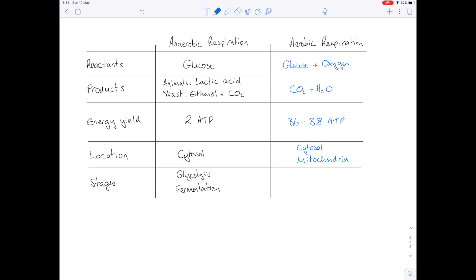These are glycolysis, the link reaction, Krebs cycle, and finally oxidative phosphorylation using an electron transport chain.